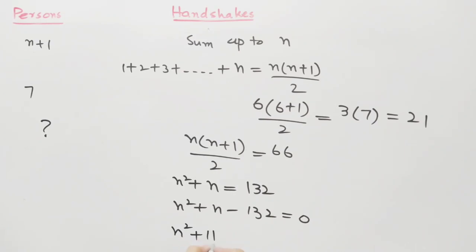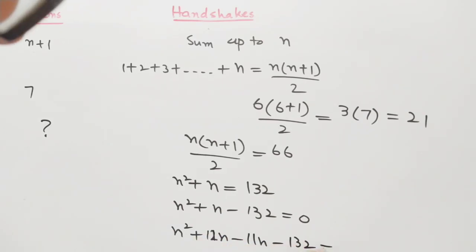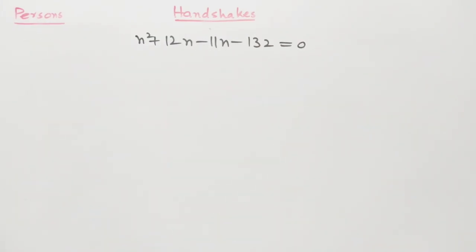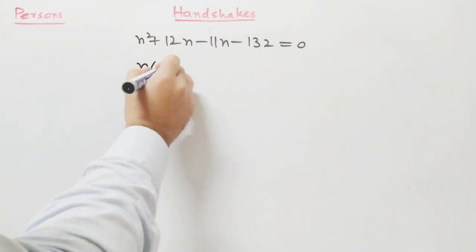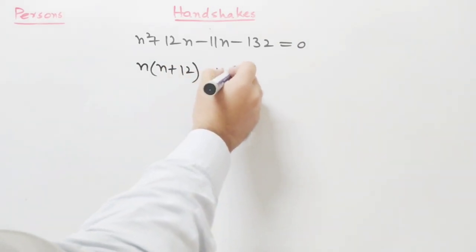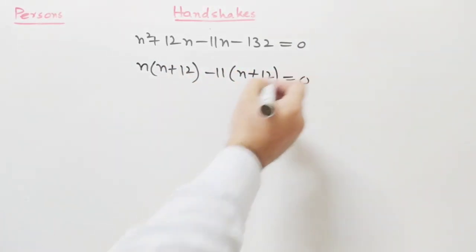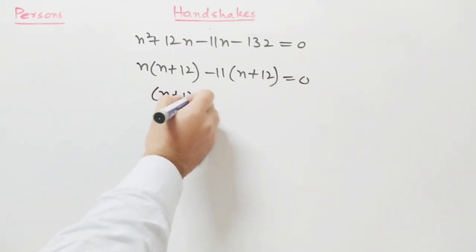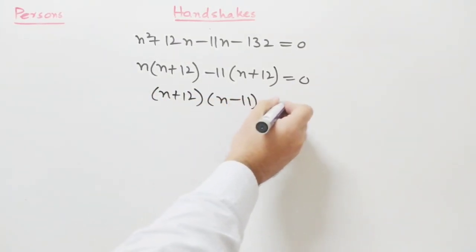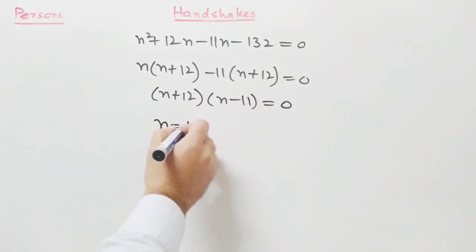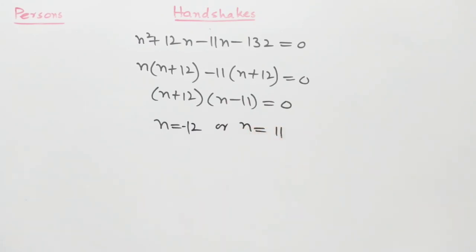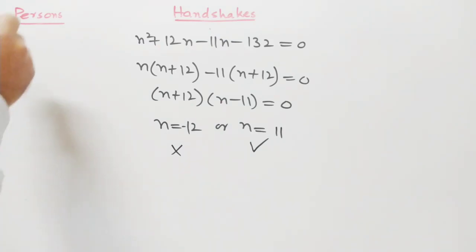We can solve this quadratic equation by the quadratic formula or by factorization. By factorization: n squared plus twelve n minus eleven n minus one hundred thirty-two is equal to zero. Taking n common: n times (n plus twelve) minus eleven times (n plus twelve) is equal to zero, giving (n plus twelve) times (n minus eleven) equals zero. So n is equal to minus twelve or n is equal to eleven.